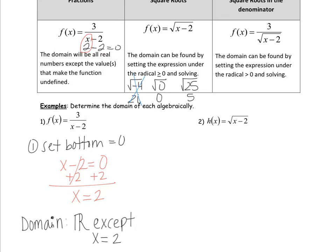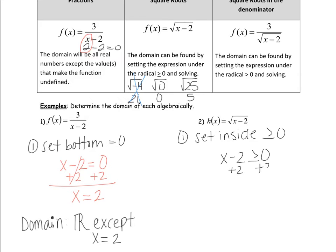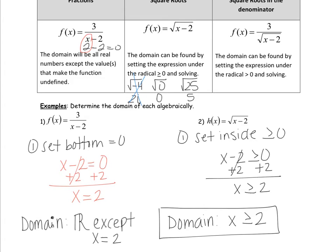To find the domain of any square root function, we set the expression under the radical greater than or equal to 0 — so it has to be 0 or higher. For this example, we set the inside greater than or equal to 0: x minus 2 is greater than or equal to 0. We solve, and we get x is greater than or equal to 2. That's our domain — all x values that are greater than or equal to 2.